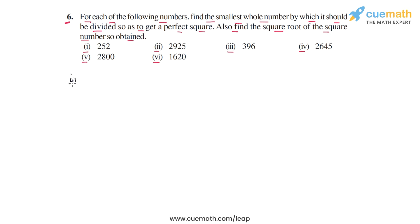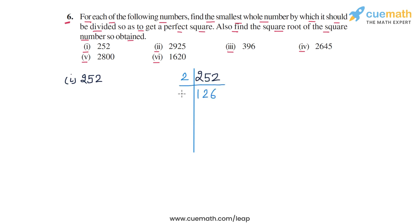In part 1, the number is 252. Let's start by prime factorizing this number. This number is even, so we start by dividing by 2, which gives us 126. Dividing by 2 again gives us 63. Then we divide by 3, giving us 21. Dividing by 3 again gives us 7. Finally, we take out the 7 and are left with 1. This completes the prime factorization process.